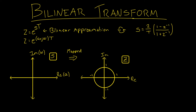What is going on my fellow human beings and welcome to another signal processing tutorial. In today's video we are going to cover the bilinear transform. The bilinear transform is a method of converting an analog filter into its equivalent digital filter, in a similar way to the impulse invariance method that we covered previously.